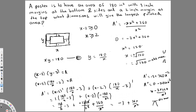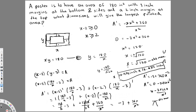So x = √120 is one dimension, and substituting back, y = 180/√120. In decimal form, x ≈ 10.954 inches and y ≈ 16.432 inches. Those are the dimensions that give the largest printed area. The final answer is x = √120 and y = 180/√120.